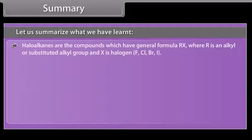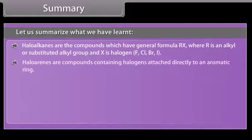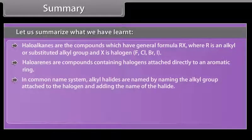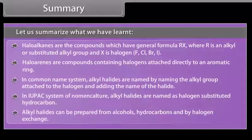In summary: haloalkanes are compounds with the general formula RX, where R is an alkyl or substituted alkyl group and X is a halogen — F, Cl, Br, or I. Haloarenes are compounds containing halogens attached directly to an aromatic ring. In the common name system, alkyl halides are named by naming the alkyl group and adding the halide name. In the IUPAC system, alkyl halides are named as halogen-substituted hydrocarbons. Alkyl halides can be prepared from alcohols, hydrocarbons, and by halogen exchange.